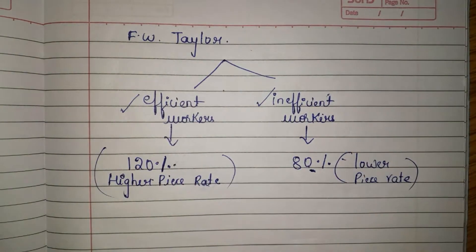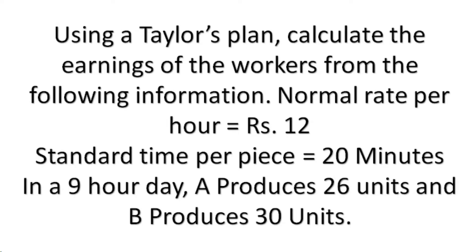The question is on the screen. Kindly take a screenshot of the question, or at least copy the question before seeing my solution. Using Taylor's plan, calculate the earnings of the worker from the following information: normal rate per hour is Rs. 12, standard time per piece is 20 minutes. In a 9-hour day, worker A produces 26 units and worker B produces 30 units.